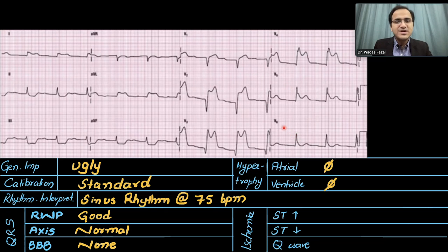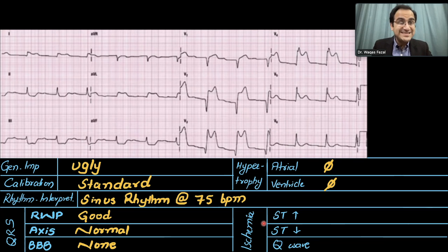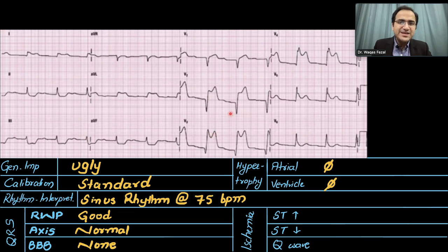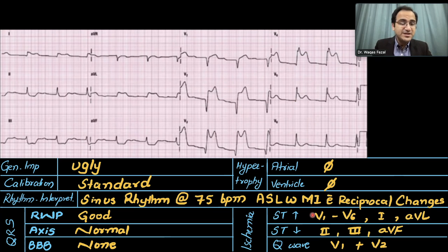Looking for bundle branch blocks by checking for an M wave in V1, V2, V5, V6 — no M wave found, so bundle branch blocks are absent. No signs of hypertrophy; tall R waves are absent and R-wave progression is normal. Now for ischemia: first finding ST segment elevations. There is ST segment elevation in lead 1, AVL, V1, V2, V3, V4, and V5 — prominent ST segment elevation in these leads.